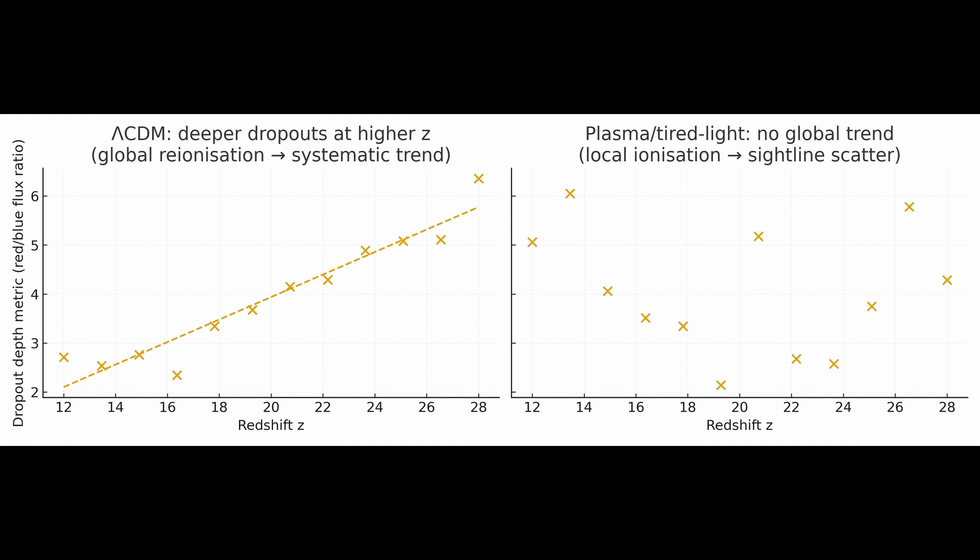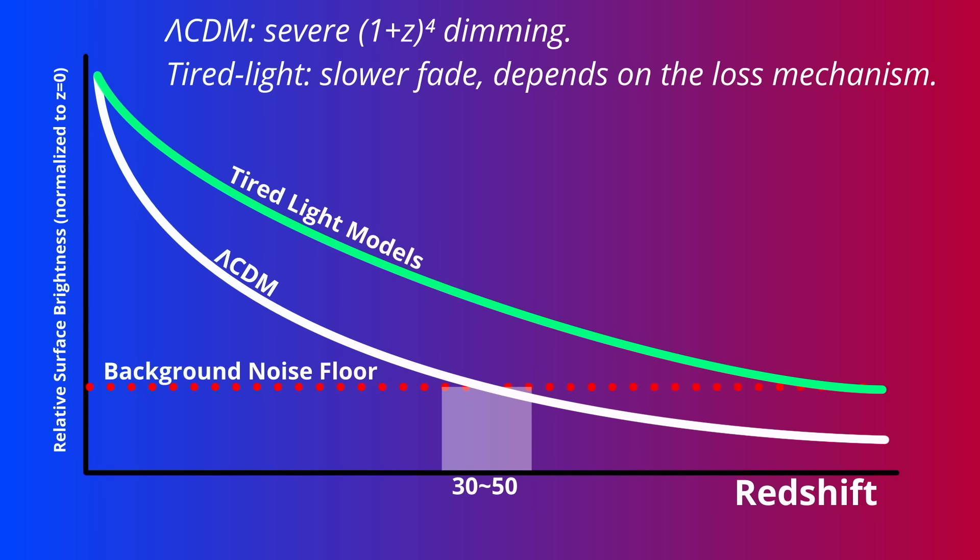So the question is simple: does the shape of the break change with redshift or not? And there's a second test hiding in the same data.